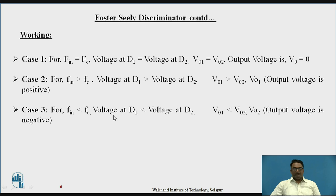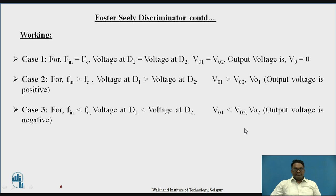In Case 3, Fn is less than Fc. The voltage at D1 is less than the voltage at D2, so V01 is less than V02. Therefore, the output goes negative. By these three cases, we can understand how FM waves are demodulated and the modulating signal is recovered.